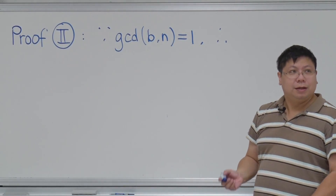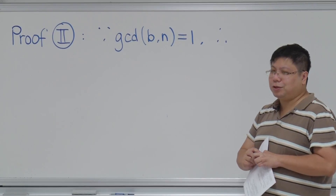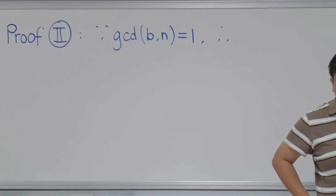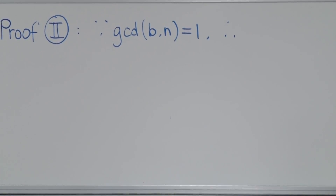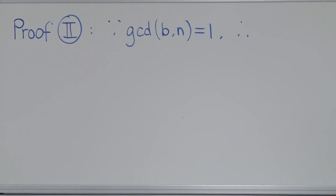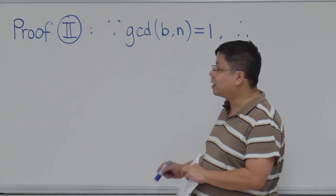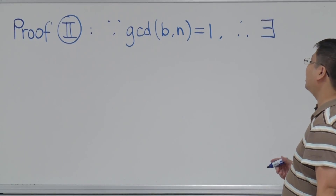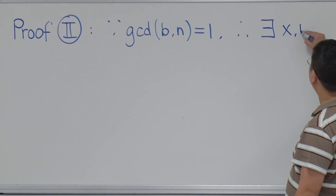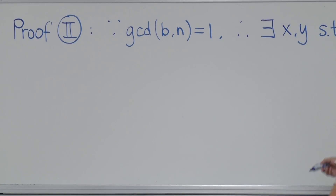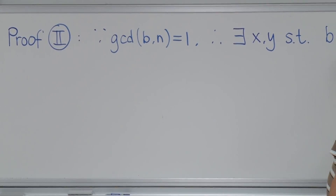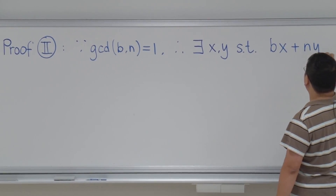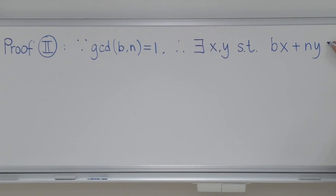So we will have — what is the definition of GCD? GCD is the smallest positive linear combination of the values of B and N. So therefore, there exist some numbers x and y, such that B times x plus n times y equals 1. This is the linear combination of B and N equal to 1.